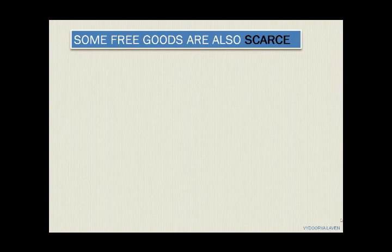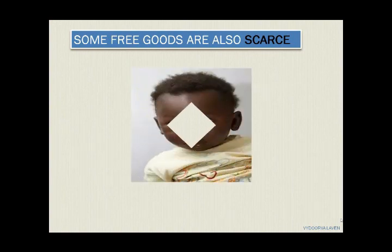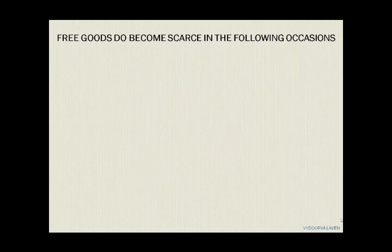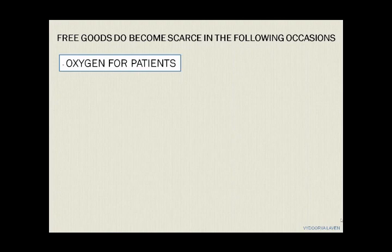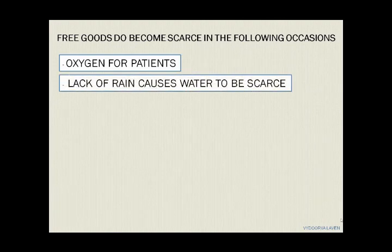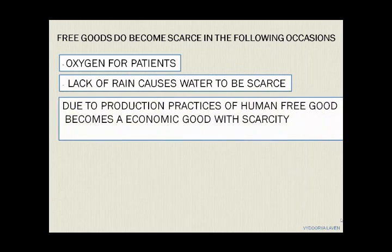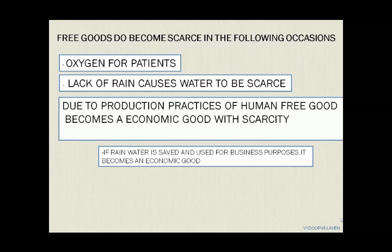An important scenario: some free goods also become scarce. Free goods become scarce on the following occasions. First, oxygen for patients — oxygen is an unlimited resource, but it becomes scarce for hospital patients because it is stored, and when that storage finishes it becomes scarce, with deaths reported due to such scarcity. Second, lack of rain causes water to become scarce. Third, due to production practices of humans, a free good becomes an economic good — for instance, if rainwater is saved and used for business purposes, it becomes an economic good.